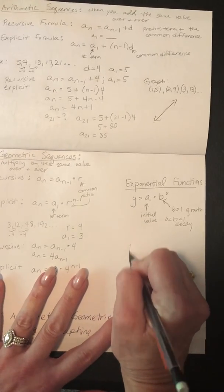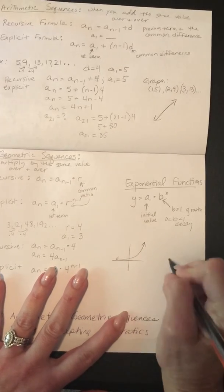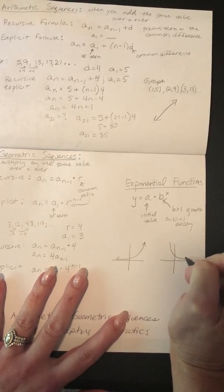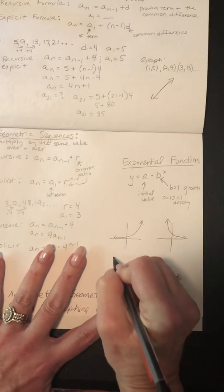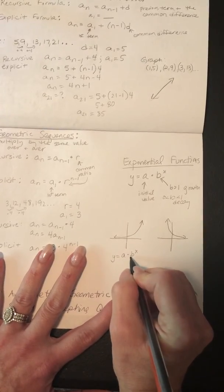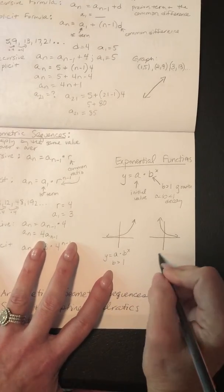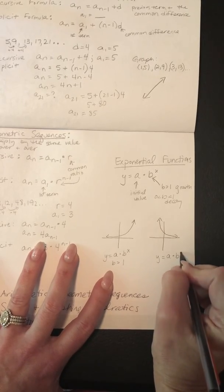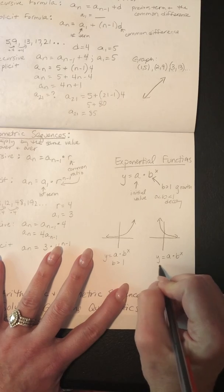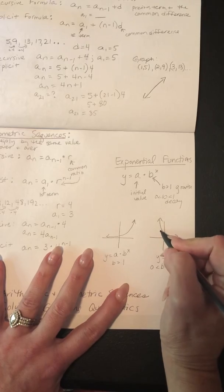Exponential growth looks like a curve shooting steeply upward, where y equals a times b to the x with b greater than 1, getting bigger and bigger. Exponential decay looks like a curve dropping toward zero, where y equals a times b to the x with b between 0 and 1, getting smaller and smaller.